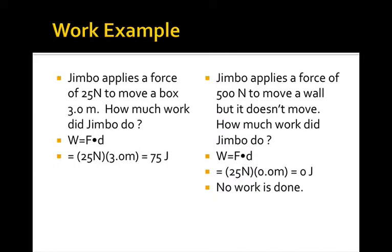Now, here's a different one. Jimbo applies a force of 500 newtons to move a wall, but it doesn't move. It doesn't matter how much force was applied, it matters if there was a displacement. So there's no displacement of the wall, so I could put it into the equation, 500 times 0, and then that's 0 joules, anything multiplied by 0. So no work is done if there's no displacement.